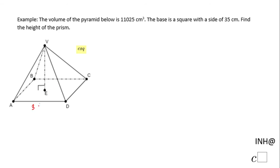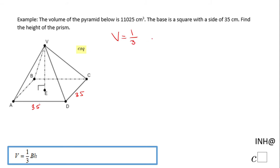So for that reason I'm going to use this formula you see here: volume equals 1 over 3, area of the base (capital B), times the height. And in this one we know that the volume is 11,025 cubic centimeters.